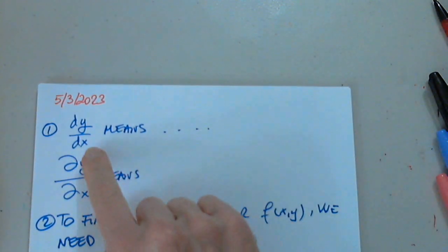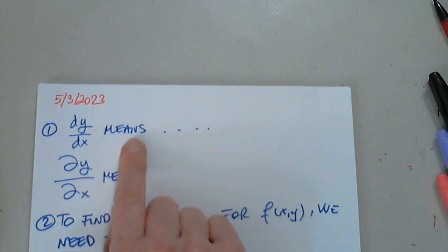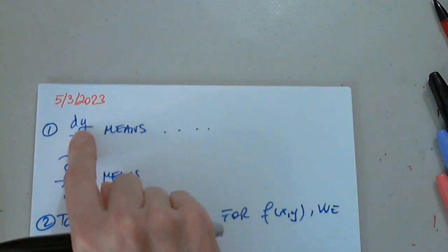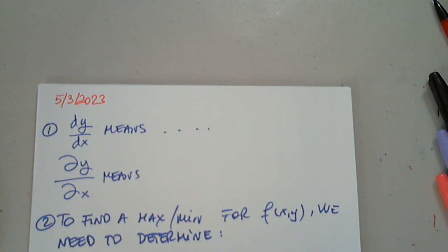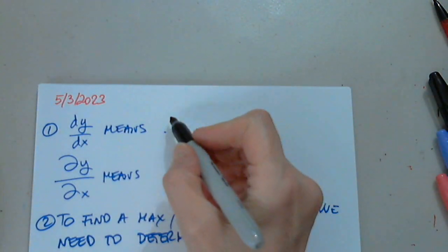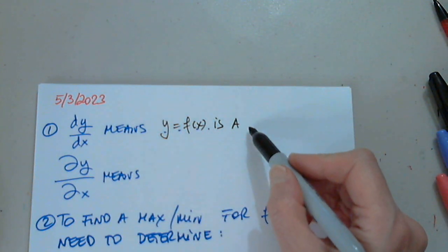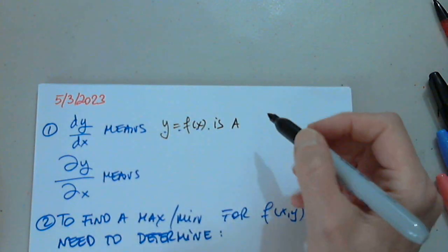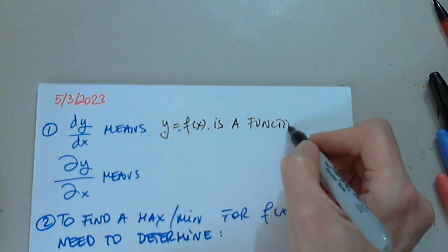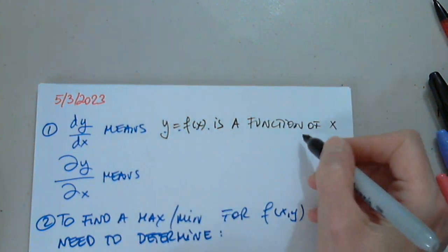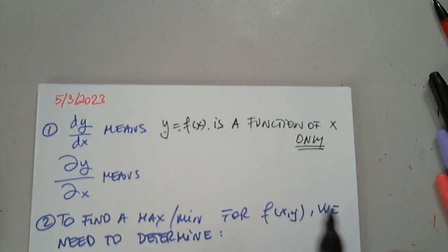So whenever we see this symbol, what does this mean? What does this symbol mean? What is it telling us? What do we need to do? Find the derivative? Correct. Yes. But it also says that y, or f of x, is a function of x. Exactly. Function of x only. Awesome. Okay.